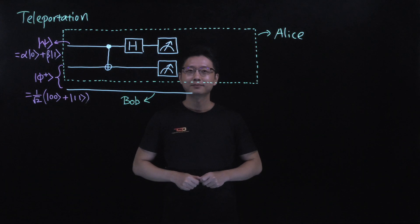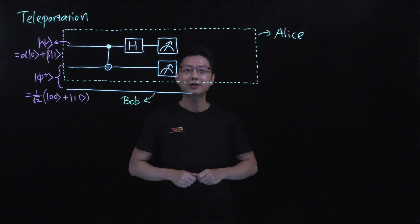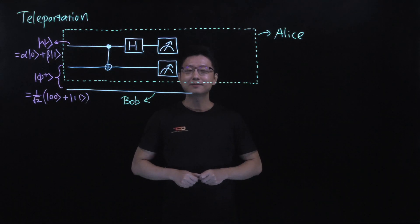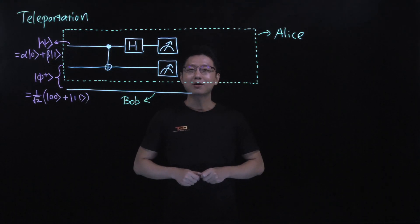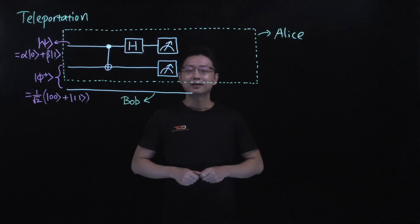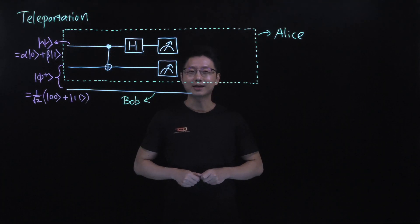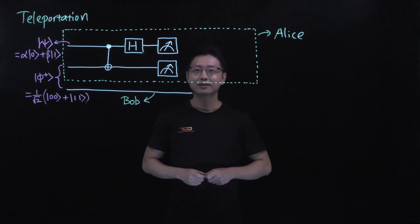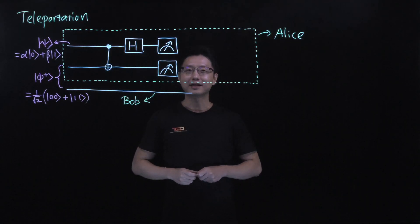In the previous lecture, using the example of the Deutsch algorithm, we have seen that quantum parallelism together with the effect of interference can bring certain quantum advantage to us when certain quantum computation tasks are carried out. There is another quantum effect that we have not discussed so much yet, which is entanglement. Using the protocol of teleportation, I will show you the power of entanglement.